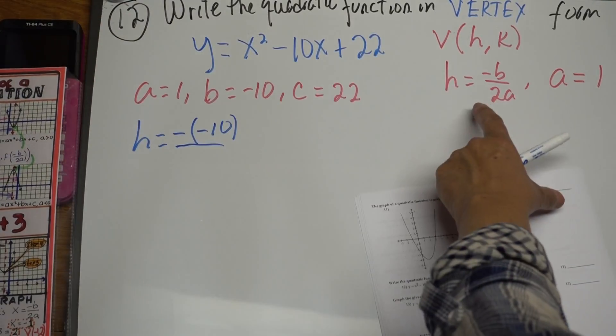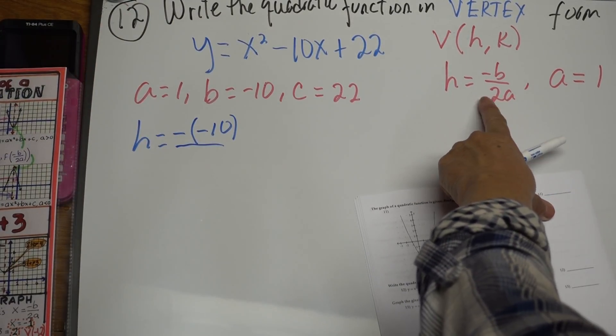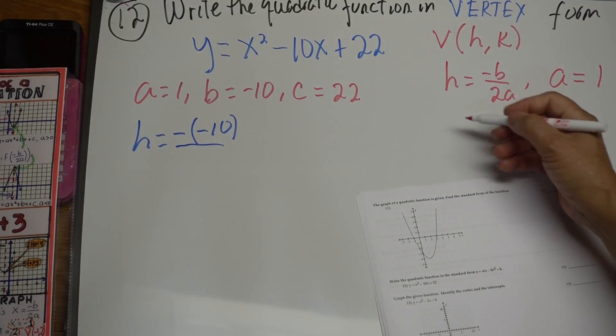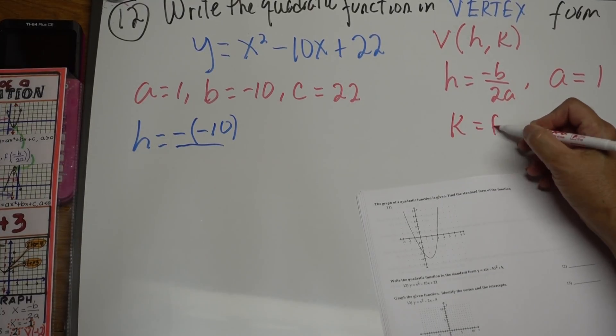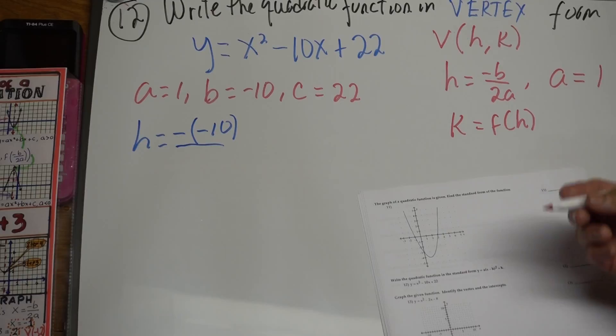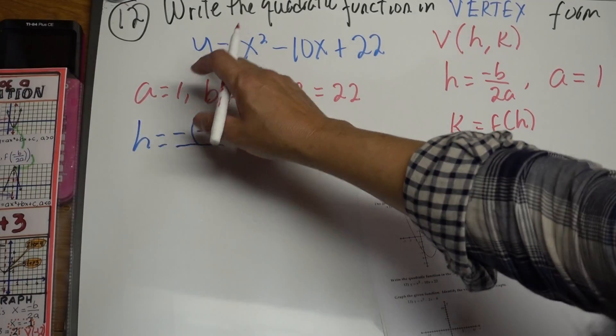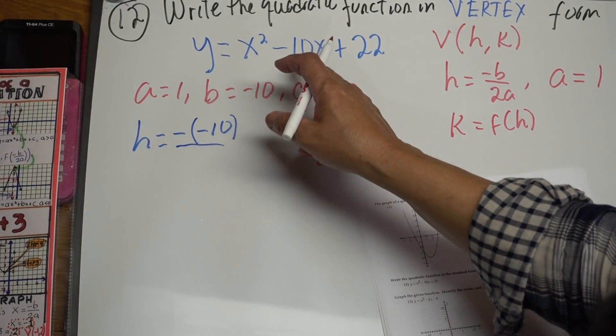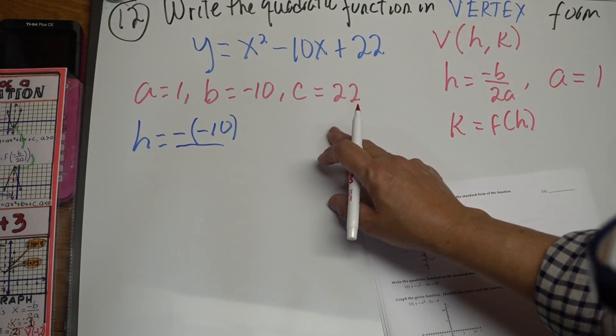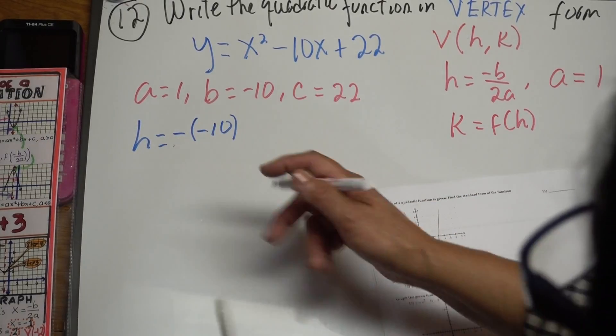So h is negative b over 2a, a is 1, and k is f of h. So we need to find h first. So I wrote here a equals 1, b equals negative 10, c equals positive 22, and we just plug it in the formula.